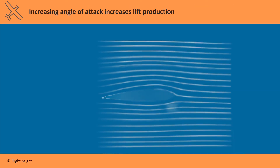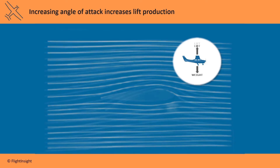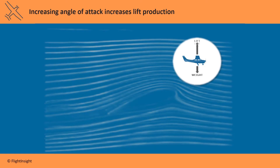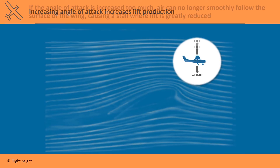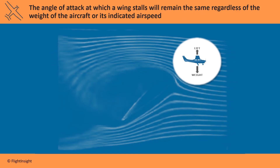A wing with zero angle of attack will produce some lift by deflecting air downwards, but as the wing is pitched up relative to the wind and angle of attack increases, the greater amount of air deflected downwards increases the production of lift. Higher angles of attack lead to greater amounts of lift force, but if the angle of attack is increased too much, air can no longer smoothly follow the surface of the wing, causing a stall where lift is greatly reduced.